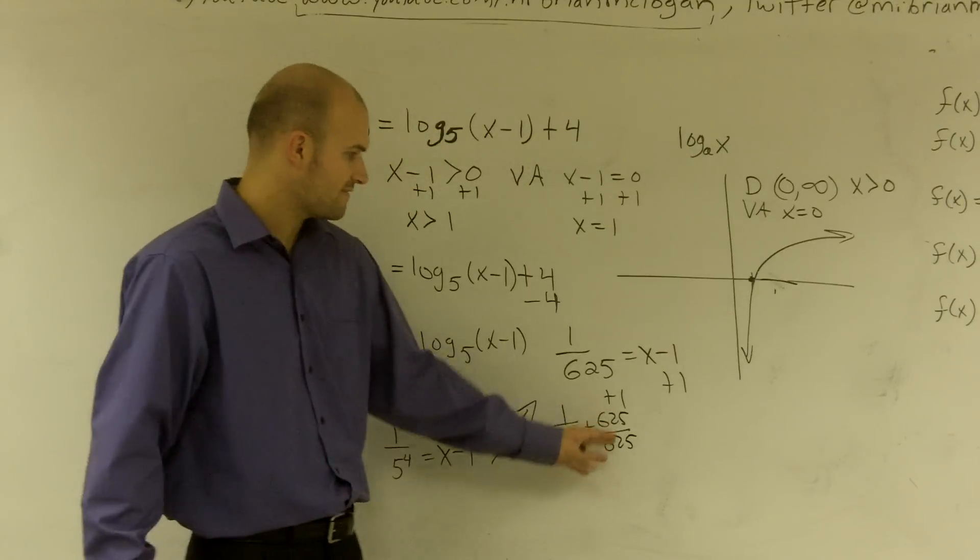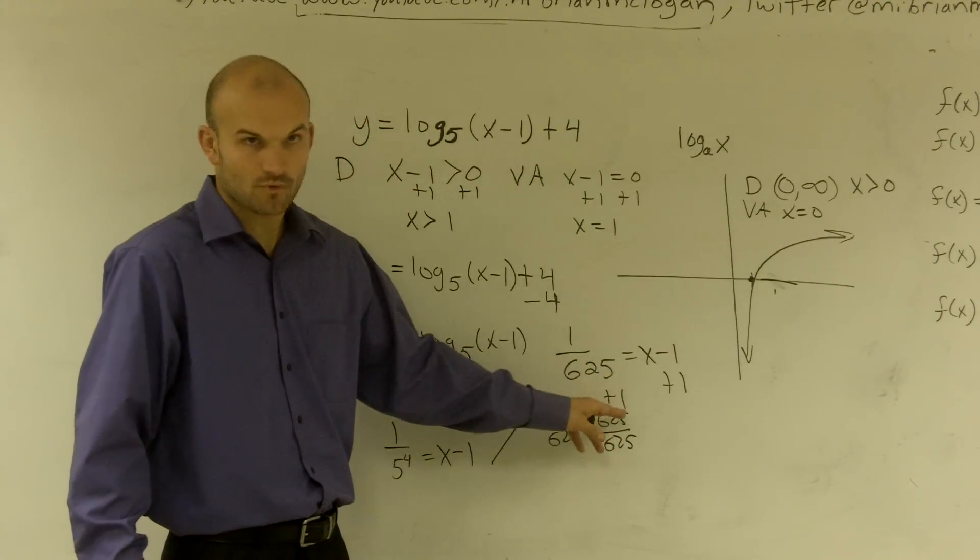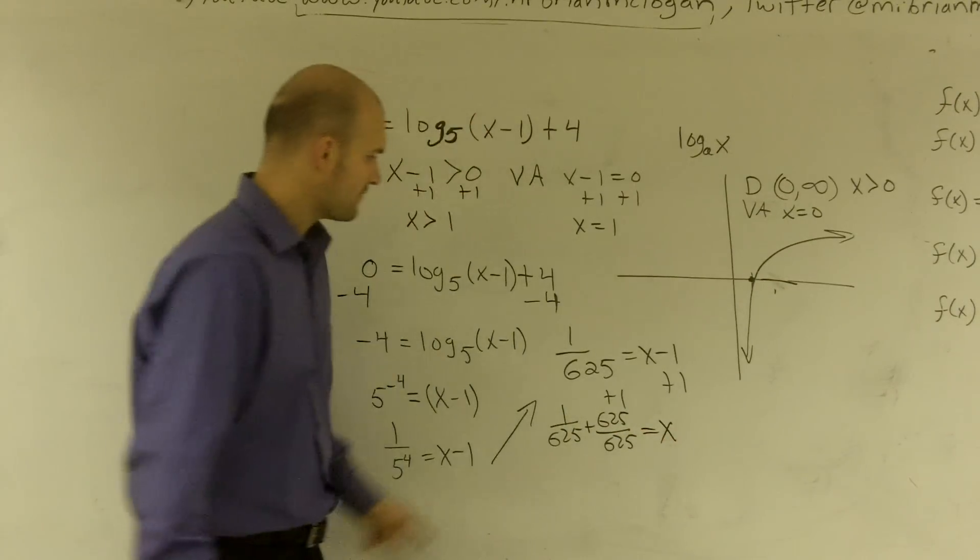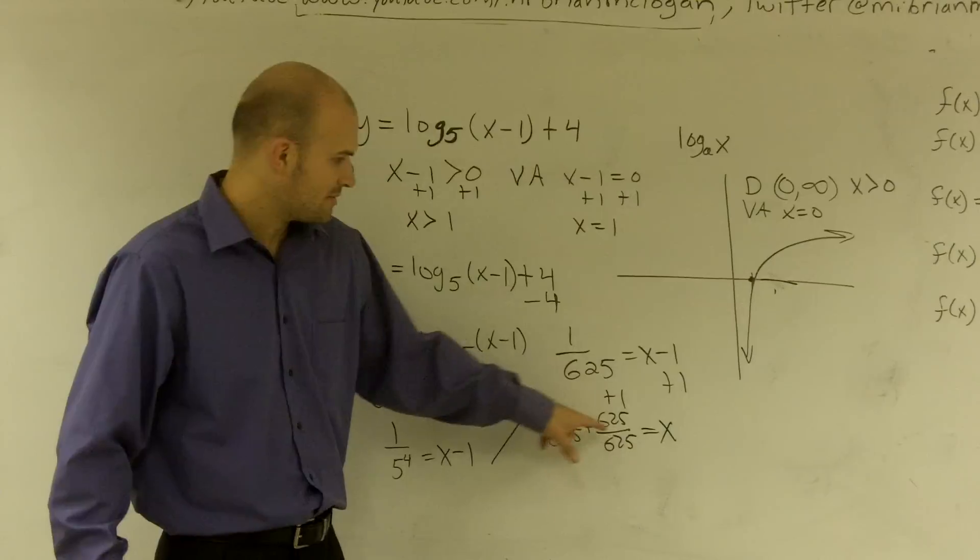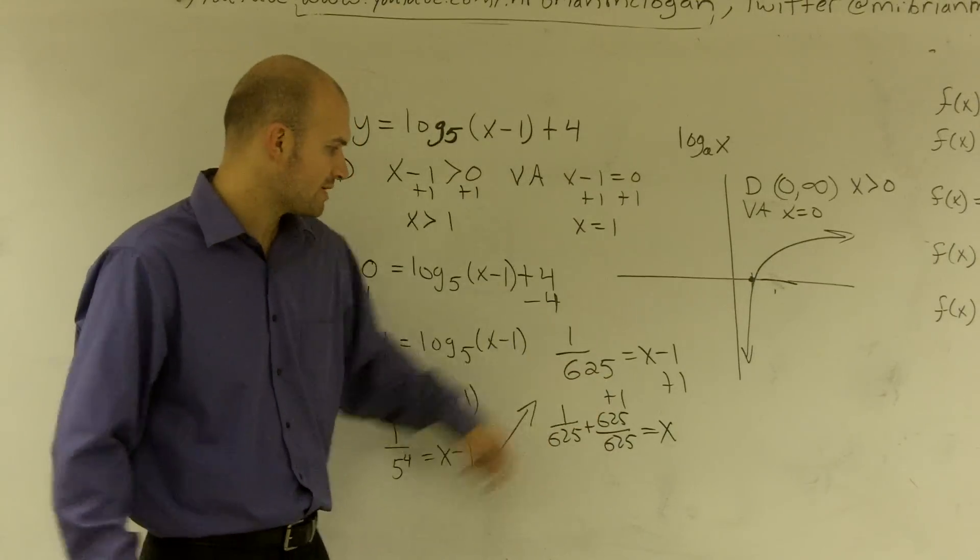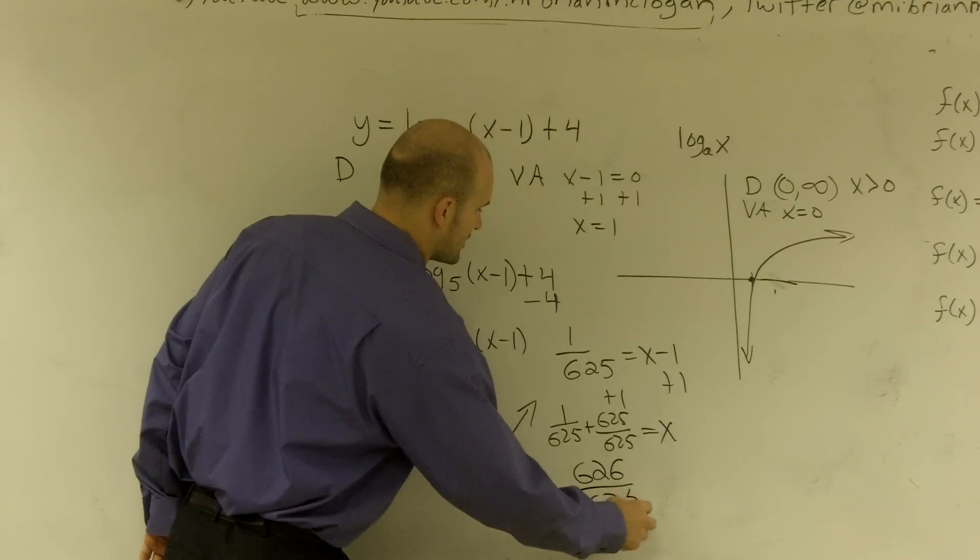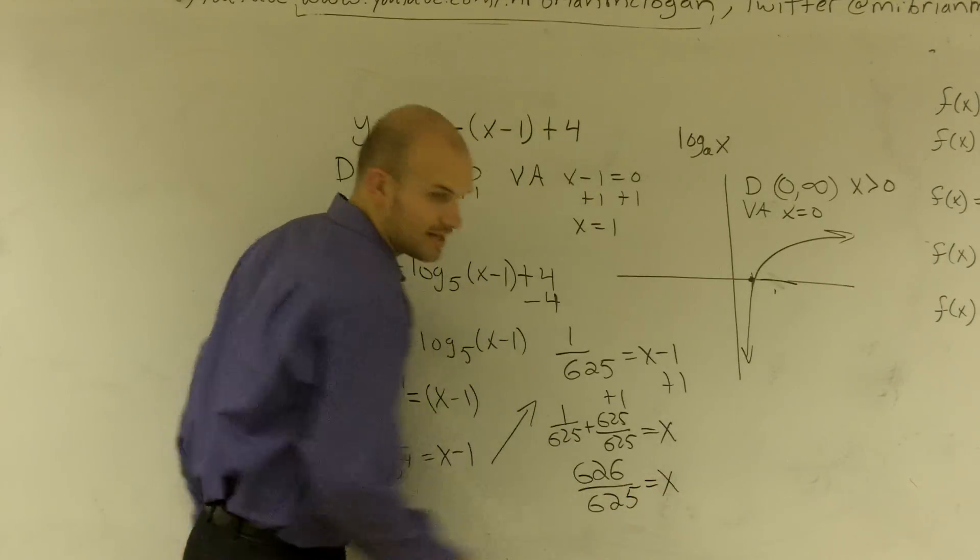Because 625 over 625 is the same as 1. When I add that equals x. So my final answer is, keeping the same denominator and adding numerators, I get 626 over 625 equals x.